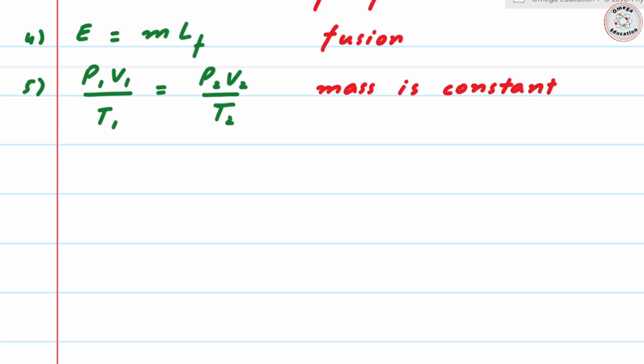So this formula can be reduced to P₁V₁ = P₂V₂. And if you're using this one, then mass and temperature both would be constant. They can ask you this question separately.